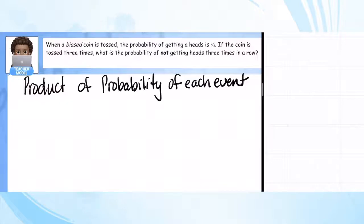Let's look at this problem: When a biased coin is tossed, the probability of getting heads is 2/3. If the coin is tossed three times, what is the probability of not getting heads three times in a row? So we want to really get the probability of getting tails three times.